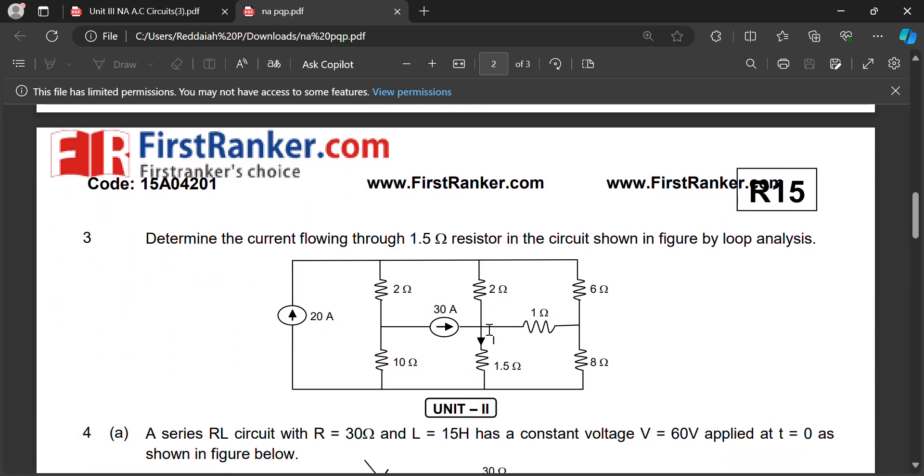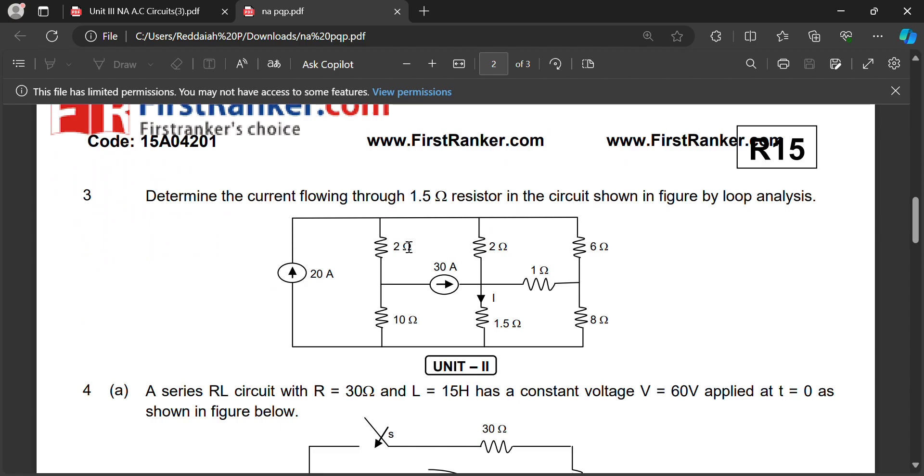Next another one: determine the current flowing through 1.5 ohm resistor for the circuit by using loop analysis. Loop analysis means mesh analysis.